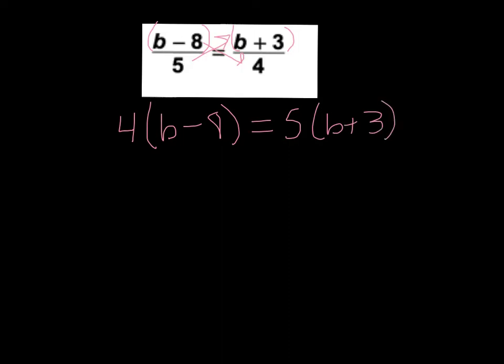Now, it just looks like our variable is on both sides. And again, whenever you have parentheses, you have to get rid of parentheses first. So I'm going to take 4 times b, which is 4b. 4 times negative 8, which is negative 32. 5 times b is 5b, and 5 times 3 is 15.